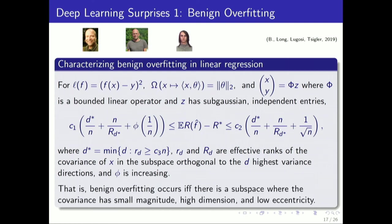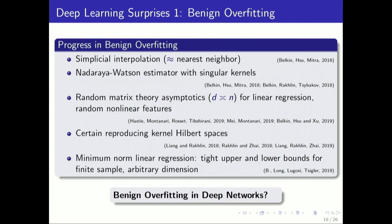The intuition there is that you need to have this subspace where you've got small magnitude covariance, it's very high dimension, and low eccentricity. And that's necessary and sufficient for being able to fit the data precisely and still predict well. This is a regime that nobody has apparently considered in the classical theory, although very classical problem. As I say, these are for problems where the analysis is amenable. We really don't understand very much about the deep learning setting for this kind of phenomenon. So that's the first surprise.